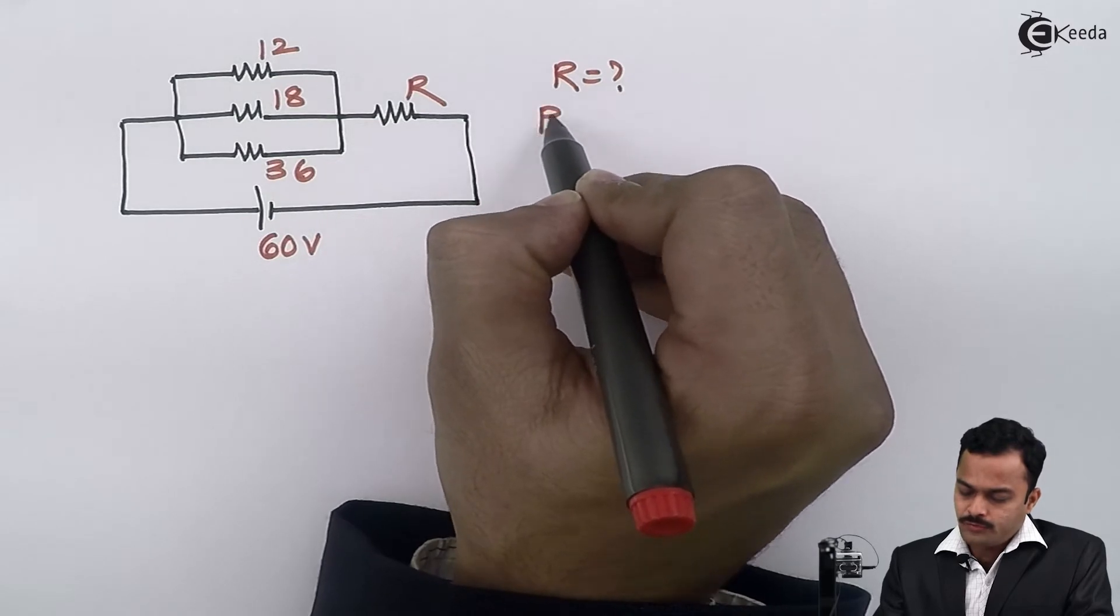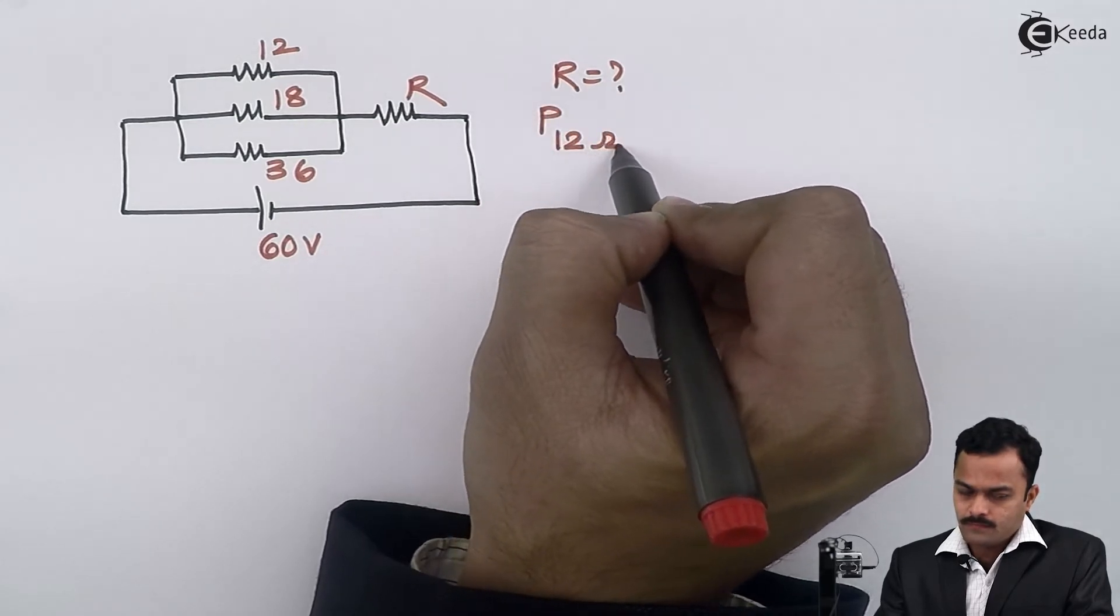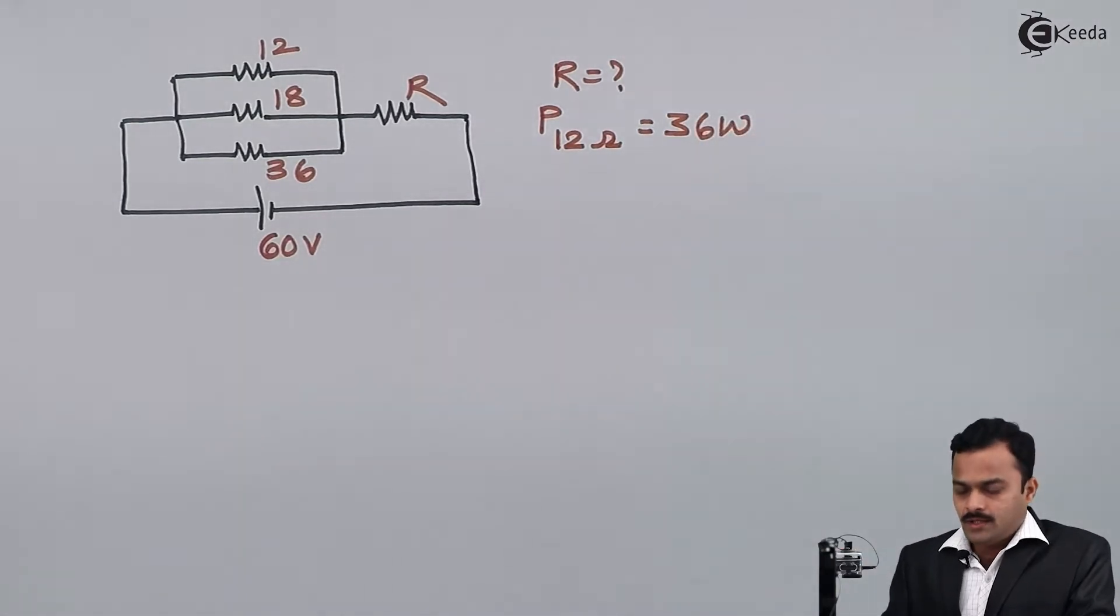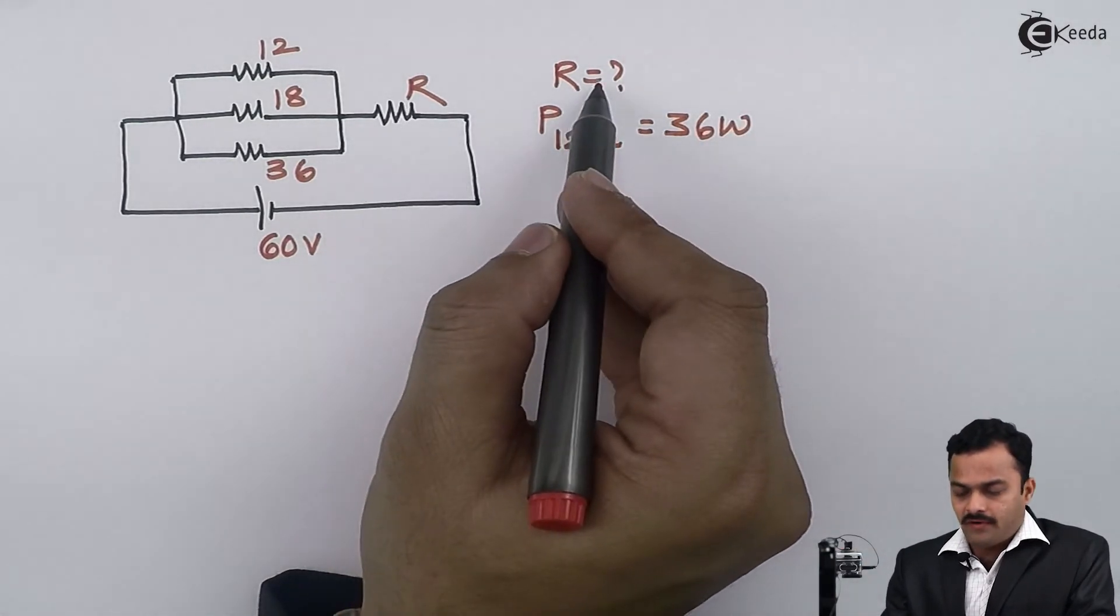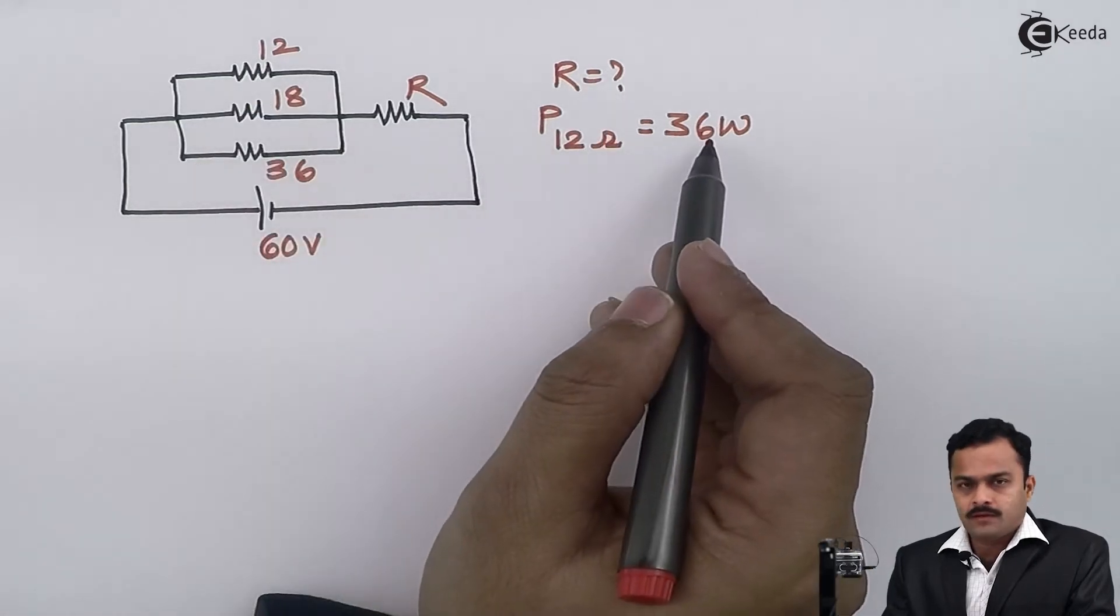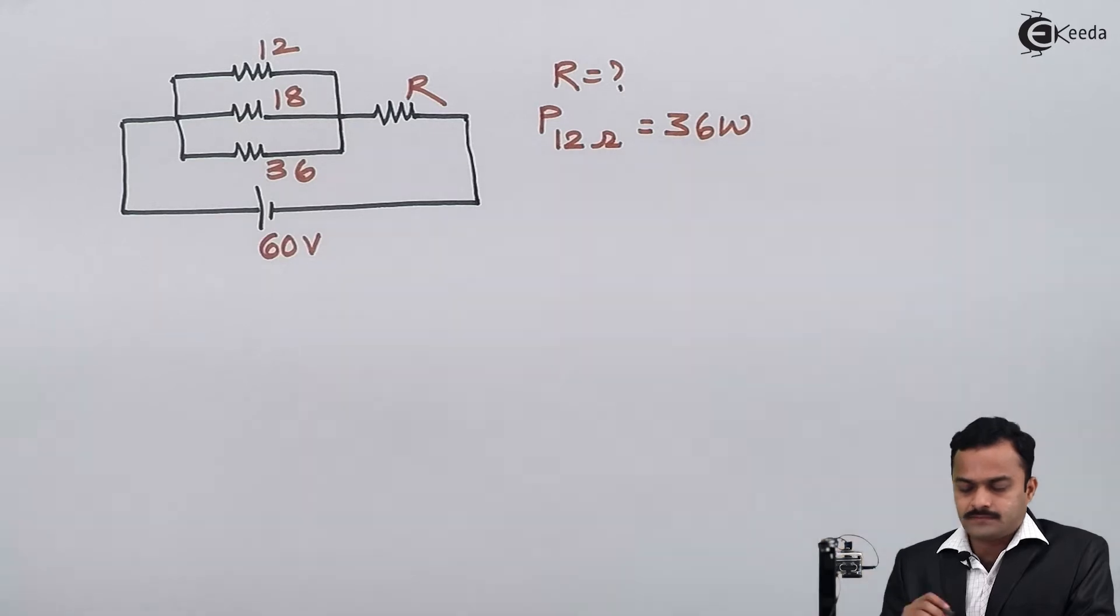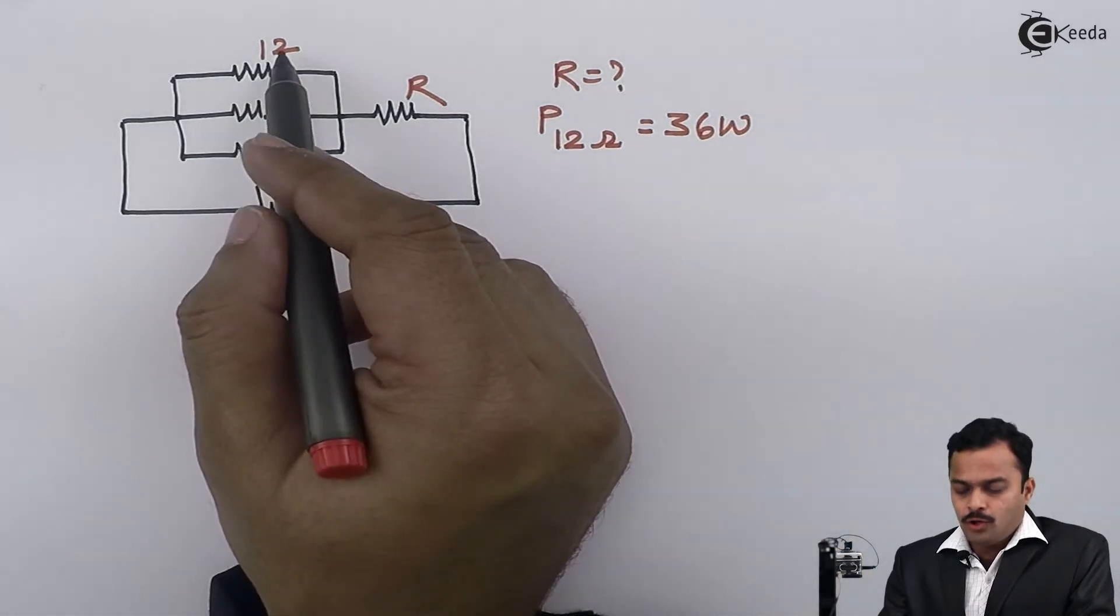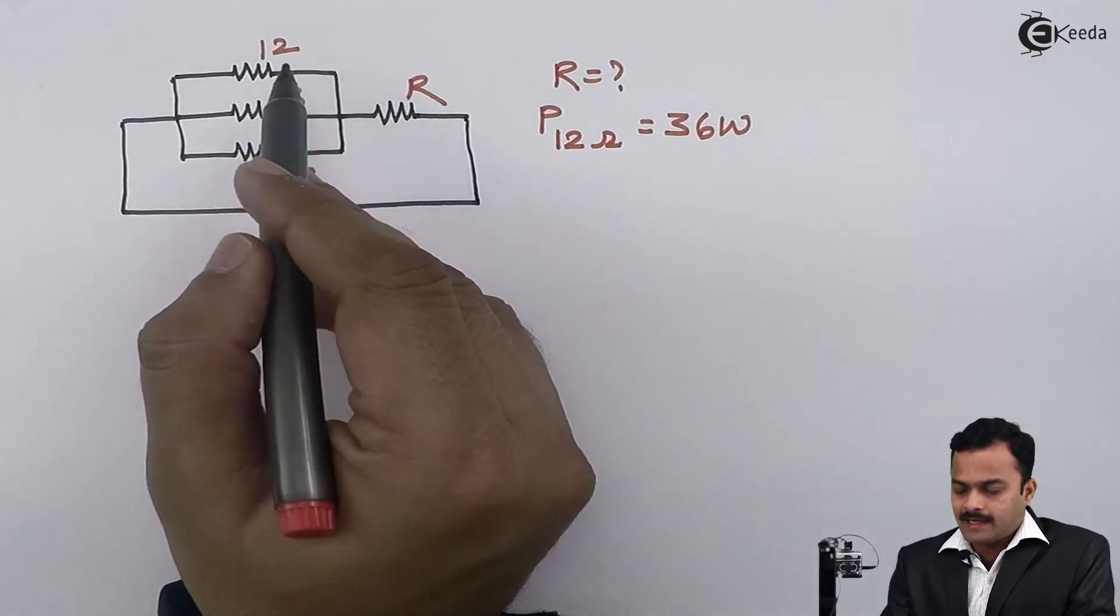We have to find the value of R such that power consumed by the 12 ohm resistor is 36 watts. I repeat: find R when power consumed by 12 ohm is 36 watts.